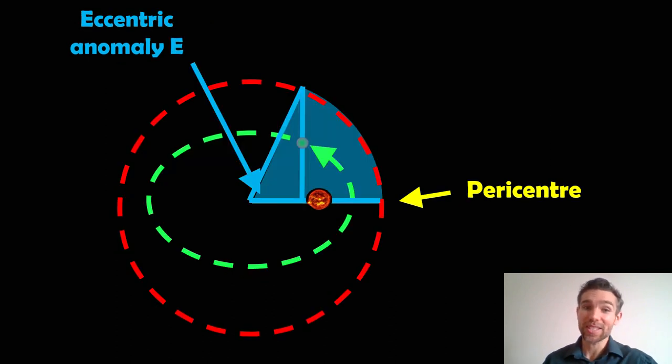And the eccentric anomaly is not the same as that. So here what we've got, we've got an elliptical orbit which is the green one and then we have a red orbit which is a circular orbit.